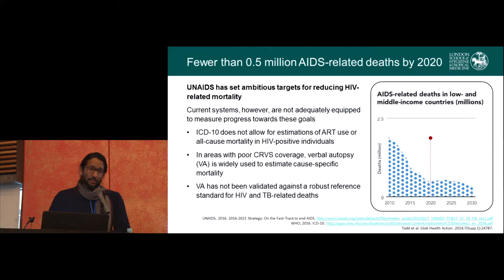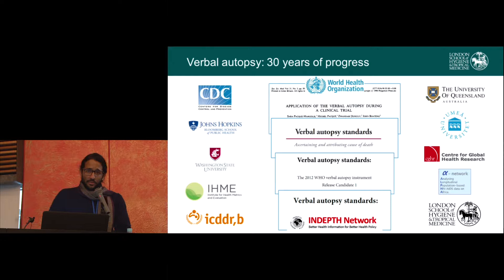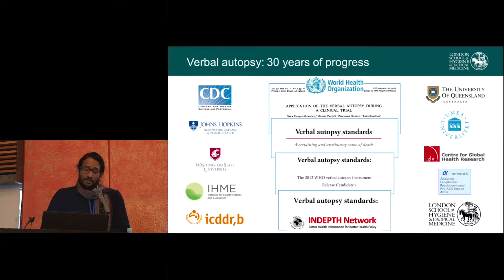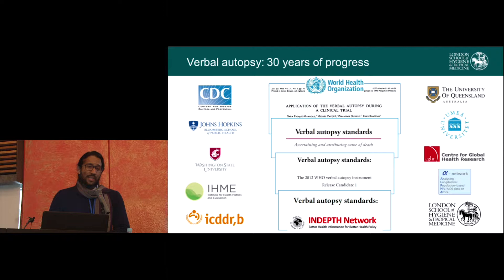However, VA for HIV and TB in particular has not been very well tested. So what is a VA? Essentially, it's just an interview with the relatives or carer of somebody who's died. It's evolved quite a lot over the last 30 years — first used in the late 1980s, but inconsistently, with everybody having their own questionnaire. Since the early 2000s, there have been considerable efforts to standardize, and there's now a WHO standardized VA instrument with standardized ways to interpret VA data and assign causes of death.